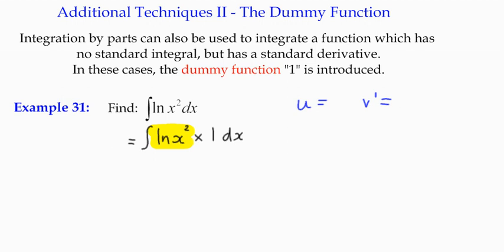So even though we're actually trying to integrate the log of x squared, to start off with, we actually are just going to differentiate it. We can nominate for v dash the other term, which in this case happens to be one.